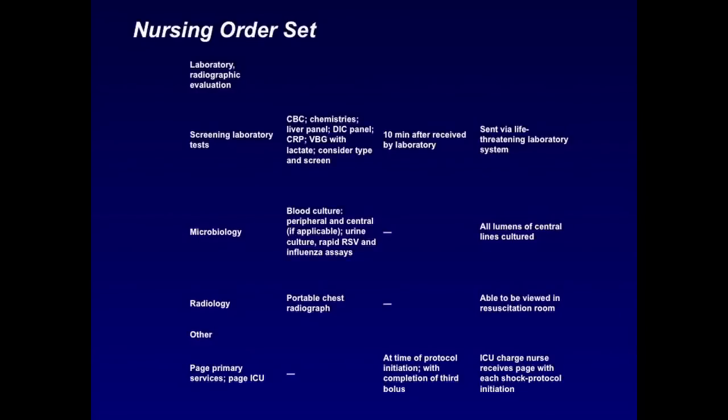And the last thing that one does in pediatrics is the actual laboratory radiographic evaluation. This comes first in adults, mostly because of the ease of drawing blood from adults rather than kids. But here they're similar. It's CBC, chemistries, liver panel, DIC panel, C-reactive protein, venous blood gas or lactate, consider type and screen, blood culture, peripheral and central. We do not hold off giving antibiotics waiting to get a blood culture because it's difficult to get blood. If there's a central line in place, one can certainly draw the blood culture quickly. Radiology, the portable chest X-ray, and it has to be able to be viewed in the emergency room in much the way that is done with trauma. And then one should page the ICU and the primary care service, at time of protocol initiation with completion of the third bolus, and the ICU charge nurse should receive a page with each shock protocol initiation. Next slide, please.